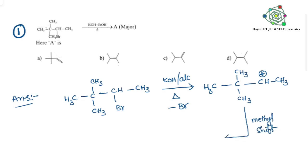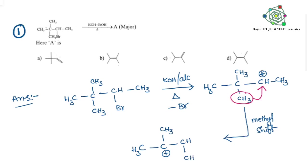Methyl shift is taking place. This is a 2nd degree carbocation, and we want to convert it into a 3rd degree carbocation because 3rd degree is more stable. Methyl shift means this CH₃ is going towards that side and the positive charge is coming to this side. So it is changing — this is now a tertiary (3rd degree) carbocation.